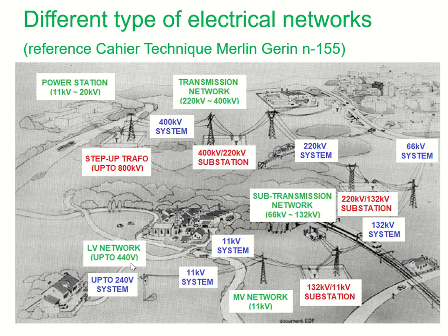When the 11 kV system reaches near the distribution sites of the consumers, it is again stepped down to a level of 440 volts using pole-mounted transformers. This is the three-phase voltage level used in our houses. Most of our equipment actually runs on single phase, so in single phase we use the voltage of 240 volts or 220 volts.